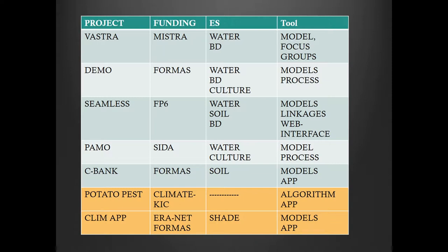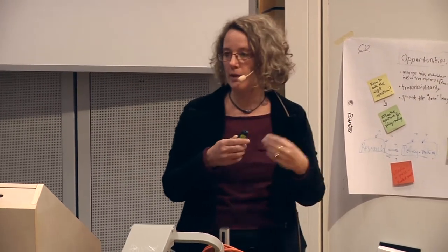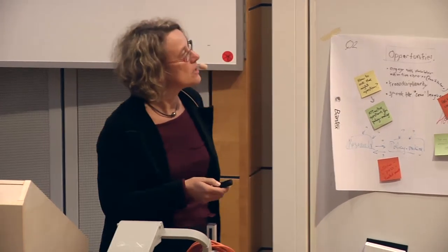Looking at the tools we have developed: we've used models and focus groups, models and participatory processes, models linked with web interfaces, models and apps. In the Potato Pest project, there is just one algorithm and an application. In ClimUp, we're using models and an app. There is a clear development from using crude models toward apps and internet interfaces.